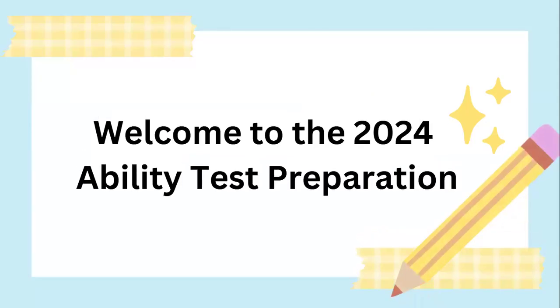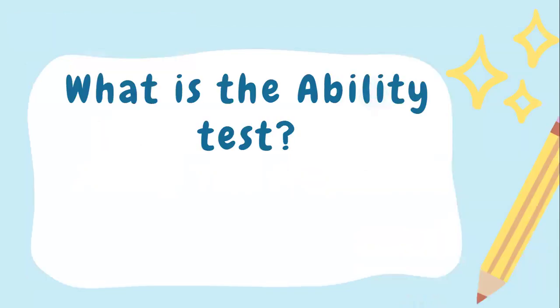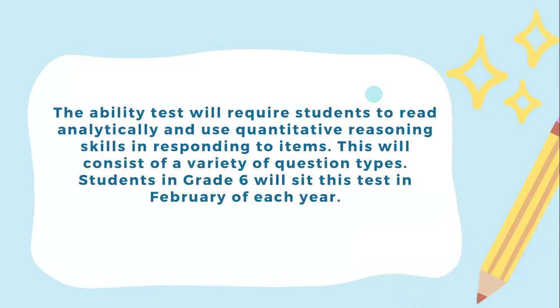Welcome to the 24 Ability Test preparation. Let's start out first with what is the Ability Test. The Ability Test will require students to read analytically and use quantitative reasoning skills in responding to items. This will consist of a variety of question types. Students in Grade 6 will sit this test in February of each year.